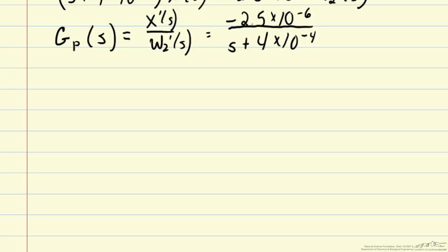Now that we have the transfer functions for the controller and for the process, we can put it all together in a block diagram. So the input to our controller is the error between the set point and the desired value. Based on the controller, we calculate w2 prime. w2 acts on the system, it's the manipulated variable.